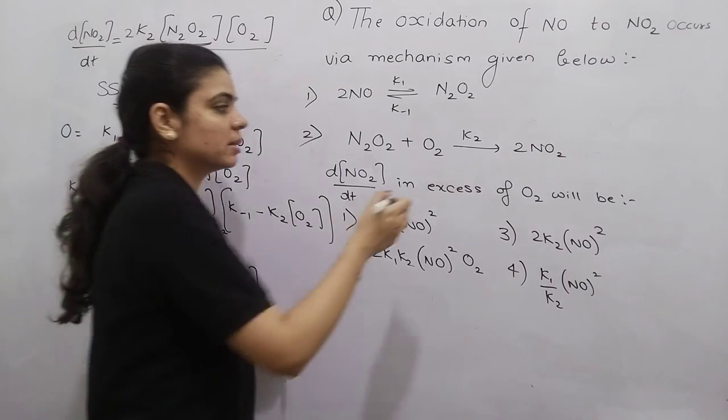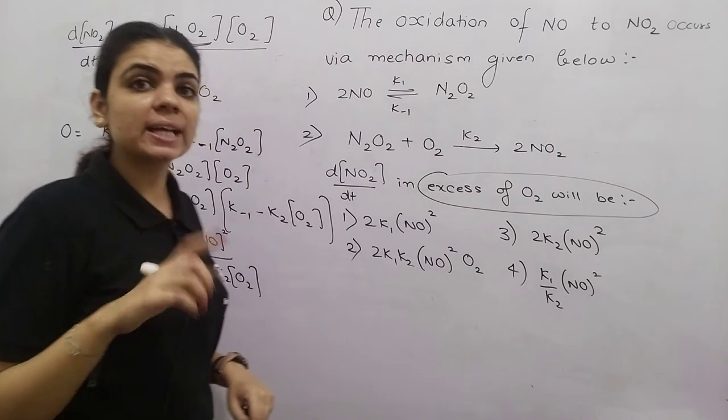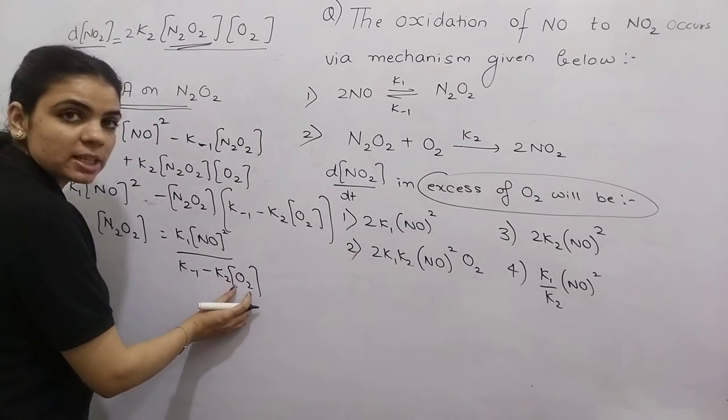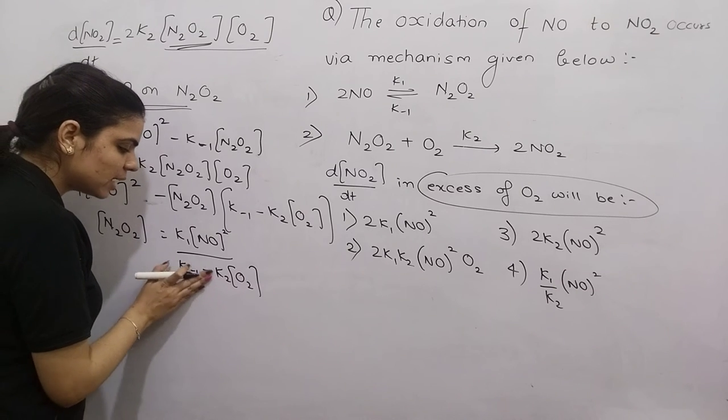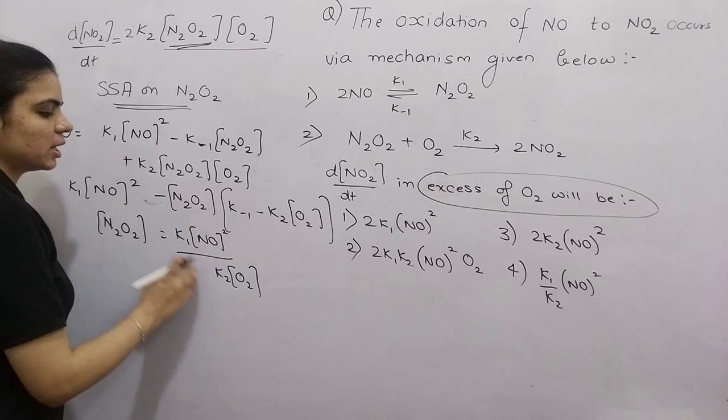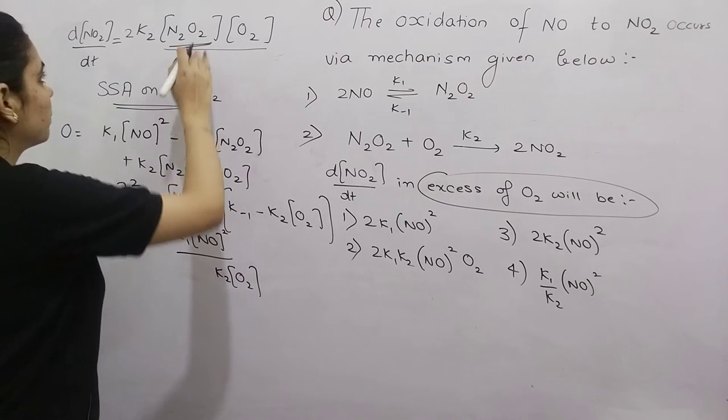Now we need to use this condition - O2 is in excess. When O2 is in excess, you can neglect K-1 compared to K2[O2]. So N2O2 becomes this simplified value.